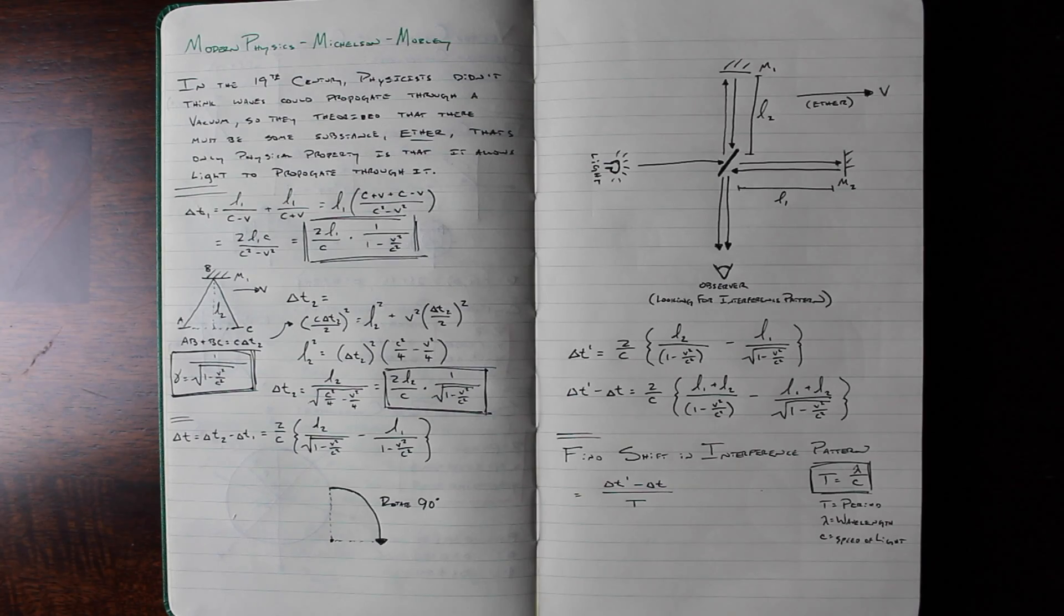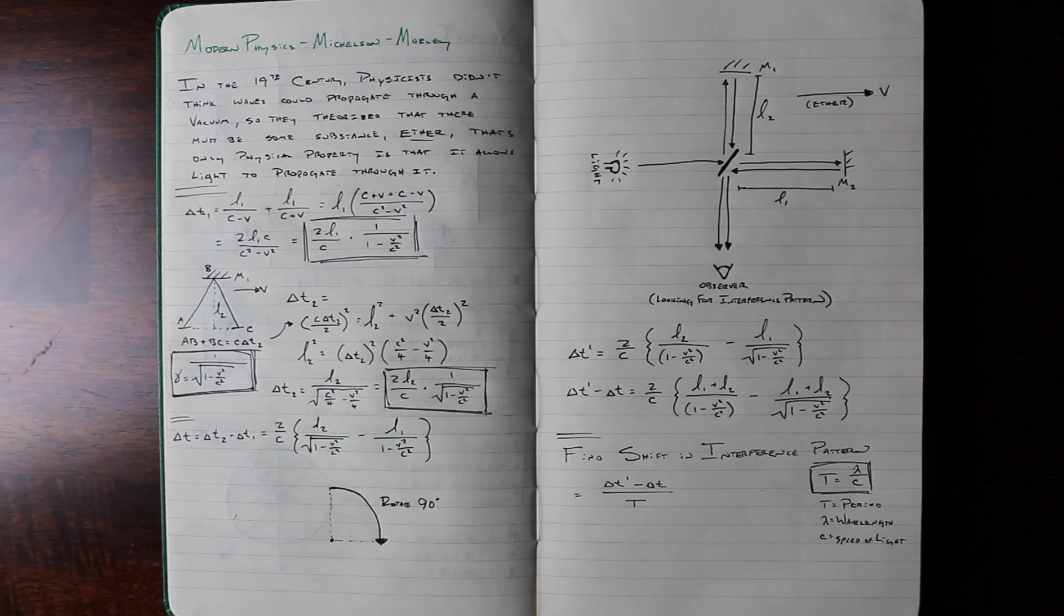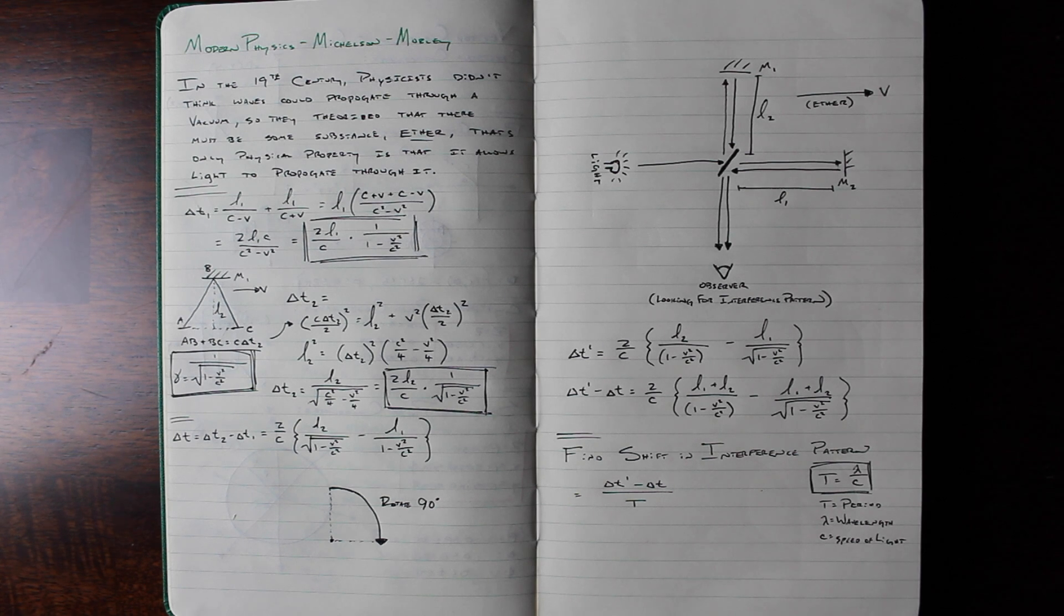Completing these calculations and then rotating the experiment, or waiting six months for the velocity of the Earth to be in the opposite direction, these calculations can be done again.